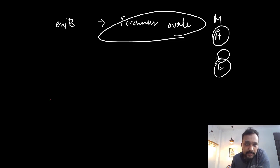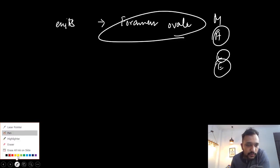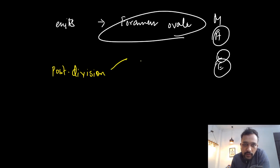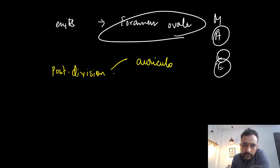Talking about the posterior division — it has three branches: the auriculotemporal nerve, the inferior alveolar nerve, and the lingual nerve.